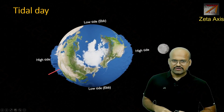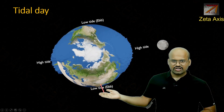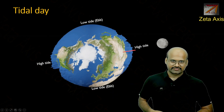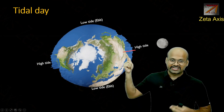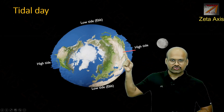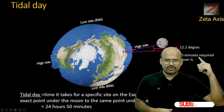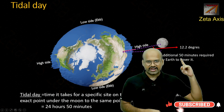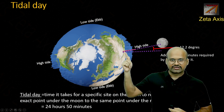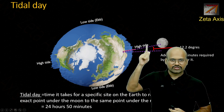This rotation will continue. Meanwhile the moon is also moving because the moon revolves around the earth. So as this point reaches the low tide region, you can see that the high tide and low tide regions have also shifted. By the time this point returns to where it started, the moon has shifted, so there is a gap this point needs to cover to be directly under the moon again.